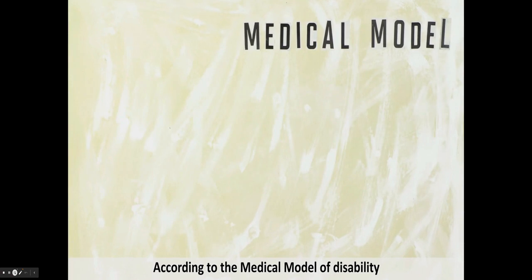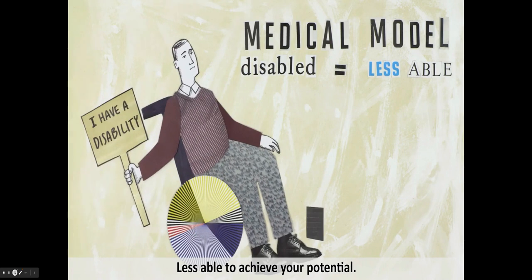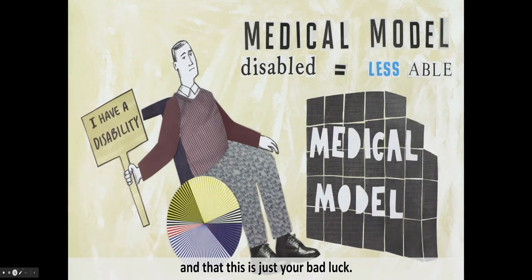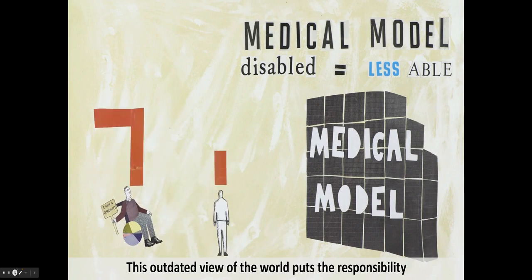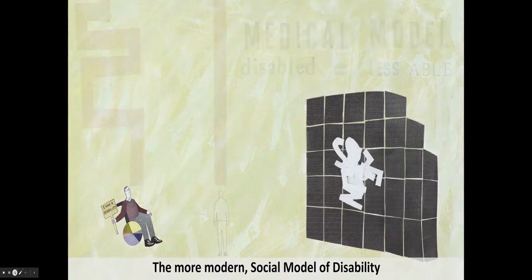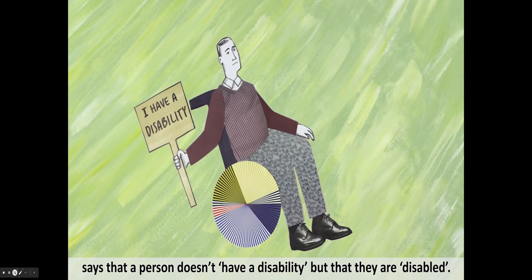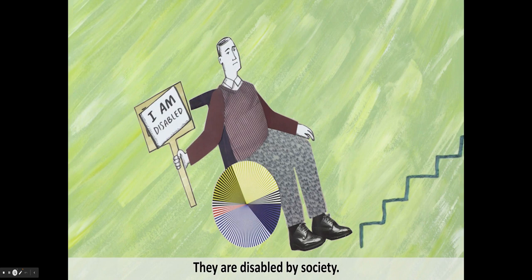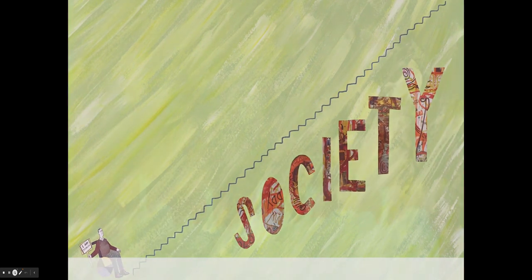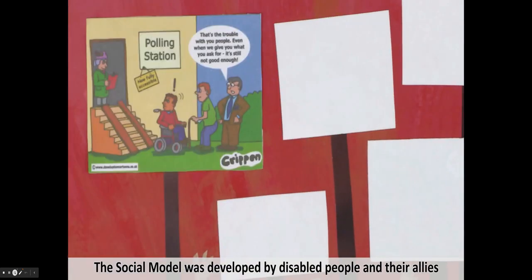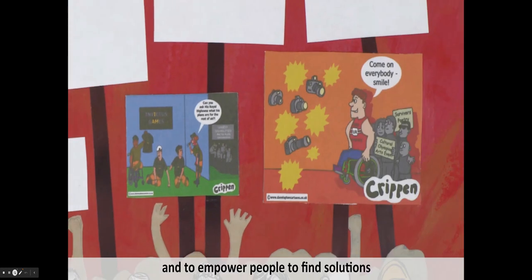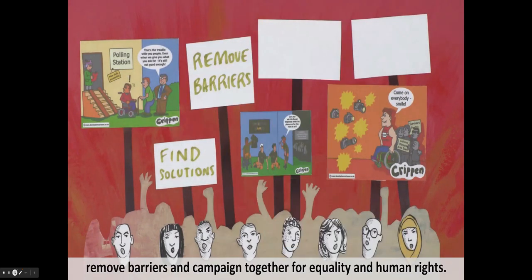According to the medical model of disability, the word disabled means less able — less able to achieve your potential, less able to have meaningful relationships, less able to play an active part in the world around you — and that this is just your bad luck. This outdated view puts the responsibility of overcoming disabling barriers on the person with an impairment. But this idea is changing. The more modern social model of disability says that a person doesn't have a disability, but that they are disabled — disabled by society. It is the attitudes and physical barriers imposed by society that prevent them from achieving their potential. The social model was developed by disabled people and their allies to help them take action against discrimination and to empower people to find solutions, remove barriers, and campaign together for equality and human rights.